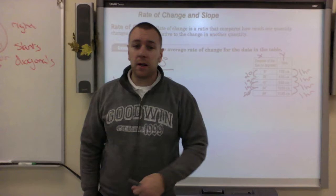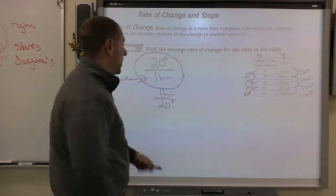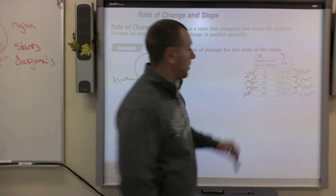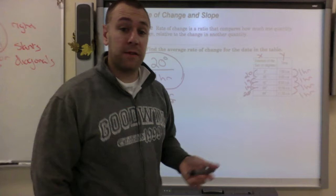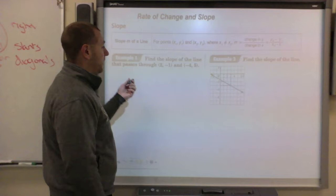The correct answer is 20 degrees per hour. Time is always on the bottom — like miles per hour. When you read a table, all you have to find is the change from one step to the next, and make a fraction out of it. Now what you're more used to is when we give you two points of data and you have to find the slope.